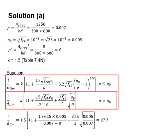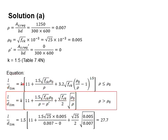From the two equations, you need to decide which equation is to be used. First, you need to find your ρ and ρ₀. The ρ is obtained from As required divided by bd, and it is obtained at 0.007. As for ρ₀, it is a function of compressive strength of the concrete, which is 0.005. By comparing these two numbers, you know that ρ is greater than ρ₀. Therefore, the second equation will be used.